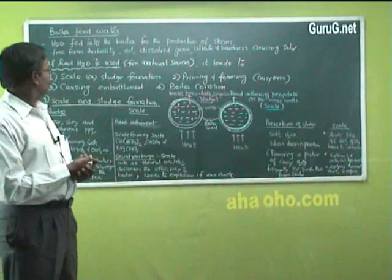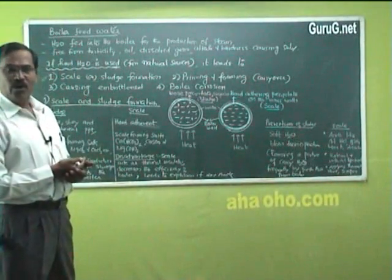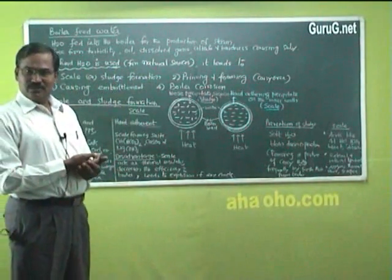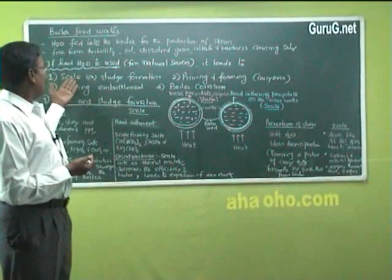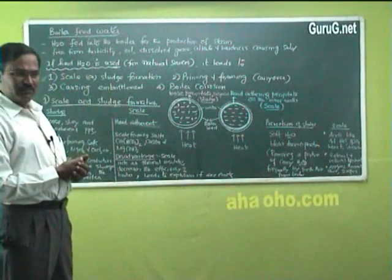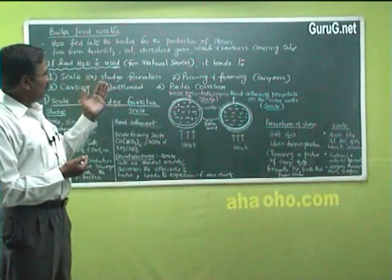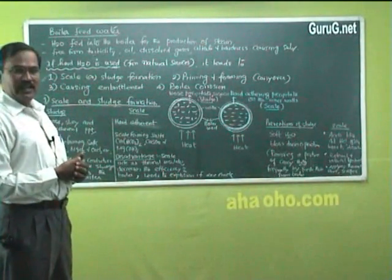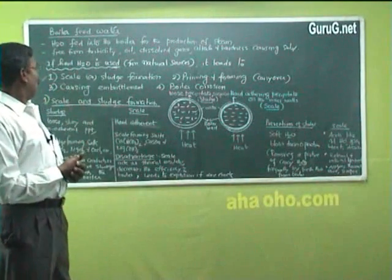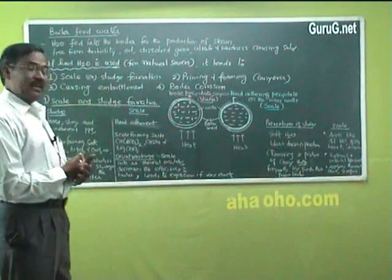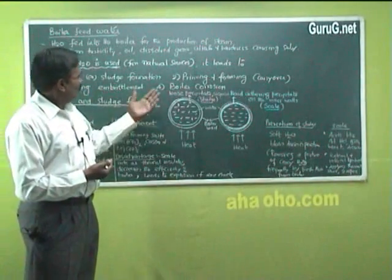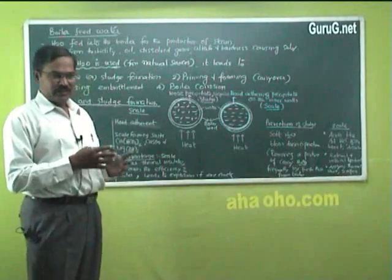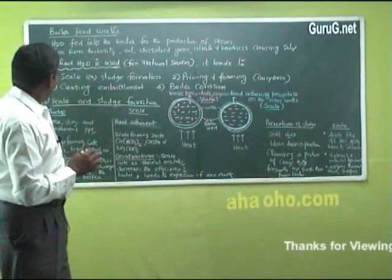If hard water is used in the boiler, it leads to four major problems: the first one is scale or sludge formation, second is priming and foaming, third it causes embrittlement, and fourth is boiler corrosion. We are going to discuss these one by one.